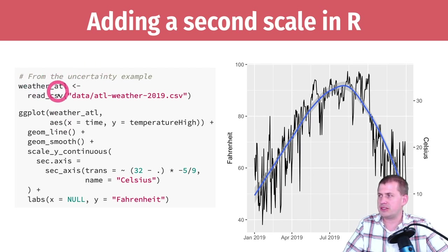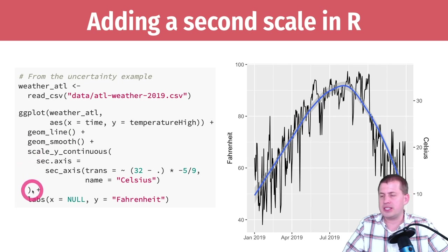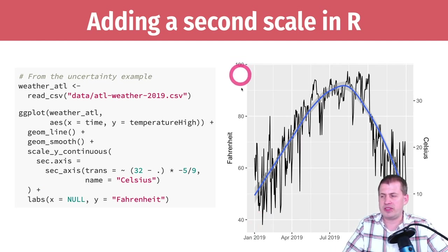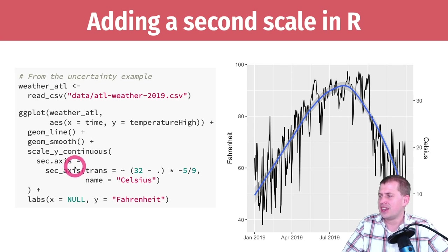Here's the code. We use the weather data set with time on the x-axis and temperature high on the y-axis, using a line and a smooth line to see temperature changes. The unique thing is the `scale_y_continuous` function, which lets us manipulate the y aesthetic. There's one argument in `scale_y_continuous` called `sec.axis`, and you use this with the `sec_axis()` function to add a second axis — which reinforces the idea that the second axis is really just a mathematical transformation of the first.